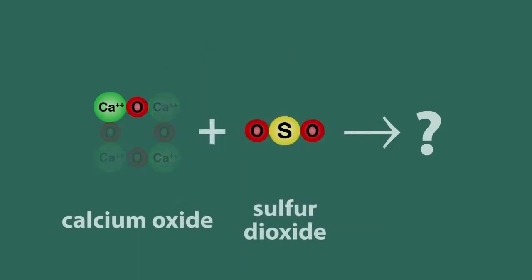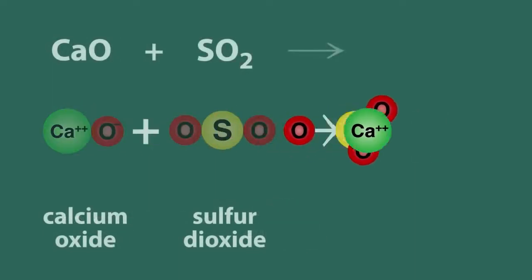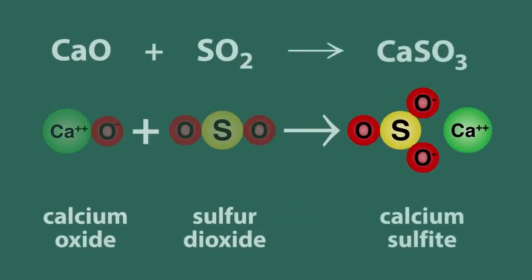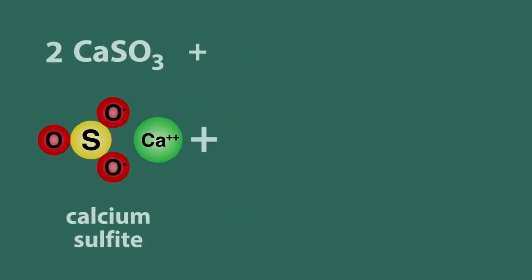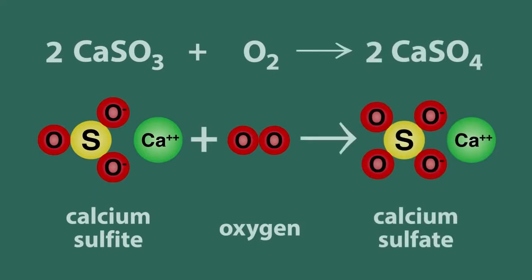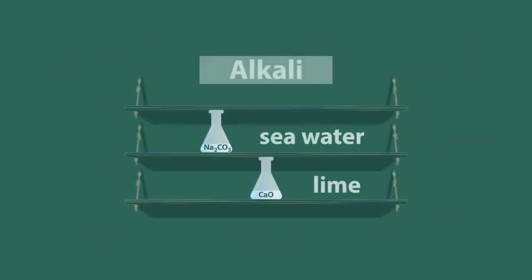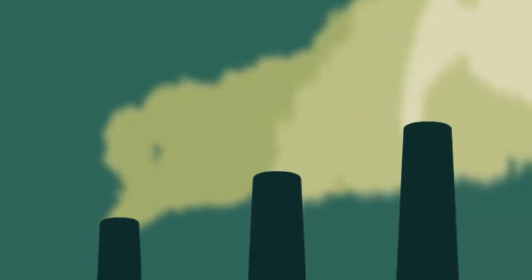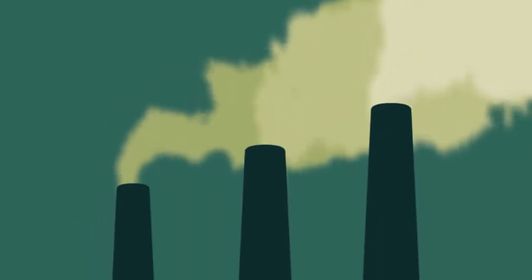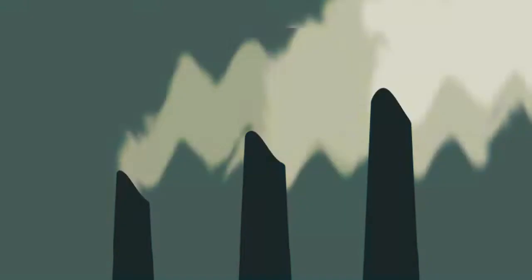Calcium oxide plus sulfur dioxide makes calcium sulfite — that's CaSO₃. The sulfite can be reacted with oxygen to make gypsum, calcium sulfate — CaSO₄ — which is the main ingredient of wall plaster. These scrubbers have greatly reduced our sulfur emissions and given many countries much cleaner air, but it does reduce the efficiency of the power station, maybe by as much as 10%, thus increasing the cost of the electricity.